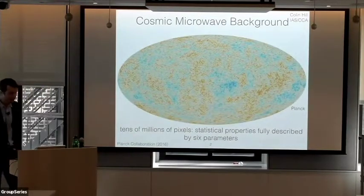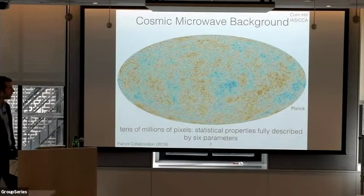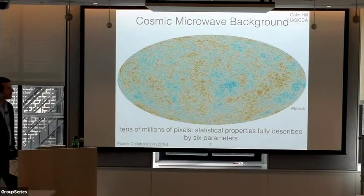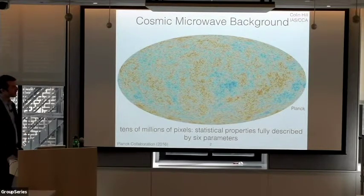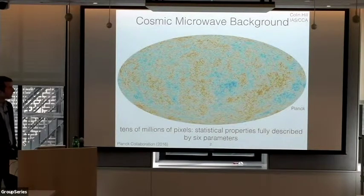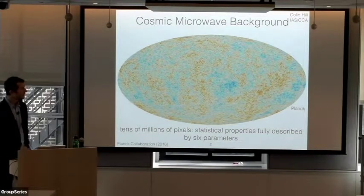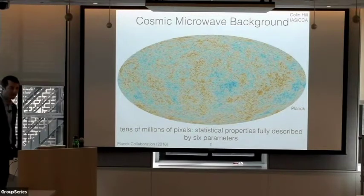So where do we stand with the CMB? This has obviously been a tremendously successful area of cosmology and astrophysics for a couple of decades or more. We have very nice full-sky maps of the CMB temperature anisotropy as measured by Planck, as well as higher-sensitivity maps on smaller regions of sky measured from the ground. There are tens of millions of pixels in this map, constructed from several sky maps made by Planck at different frequencies, and the statistical properties are fully described by a simple model with just six parameters.